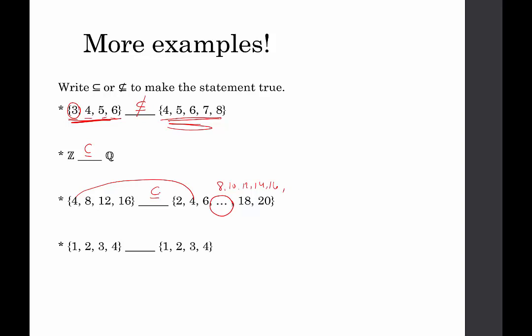And then lastly, is {1, 2, 3, 4} a subset of the set containing the elements {1, 2, 3, 4}? The answer is yes, it is. Right, because the definition of a subset is that I can take the 1 and find it in the other set. I can take the 2 and find it in the other set. Take the 3, find it in the other set. Take the 4 and find it in the other set. Now, you might be saying, but wait, there's nothing else in that set. And that's true.